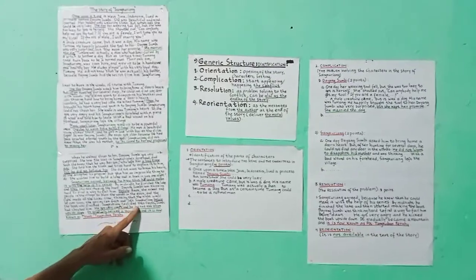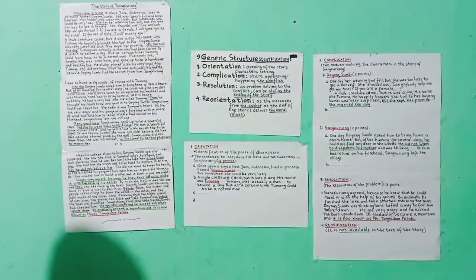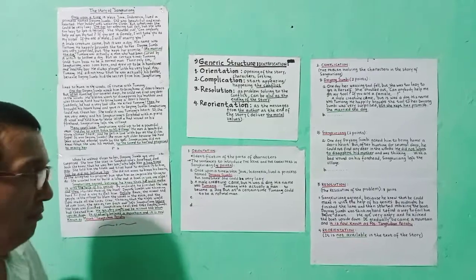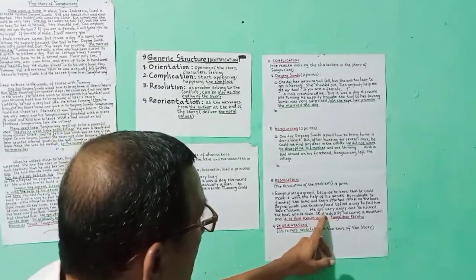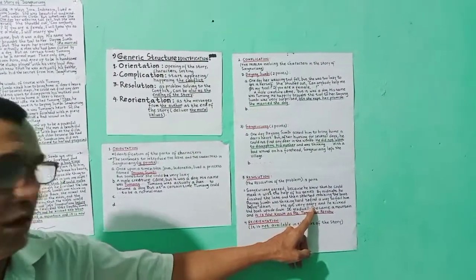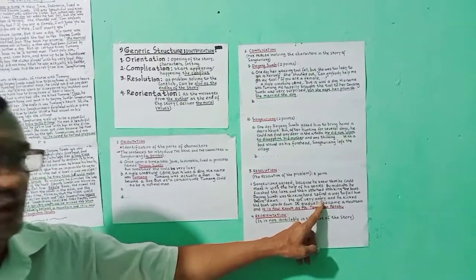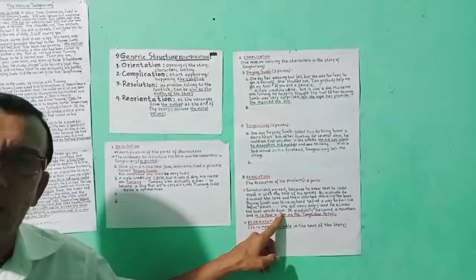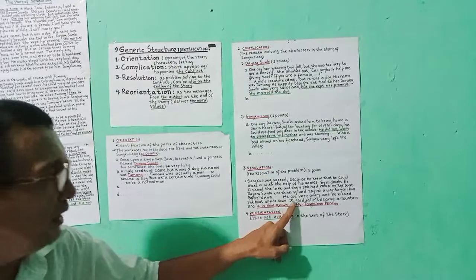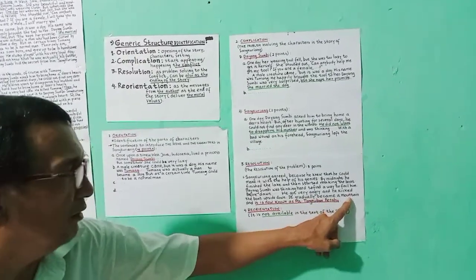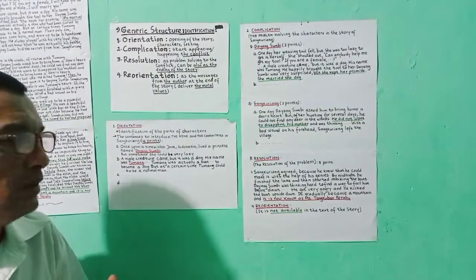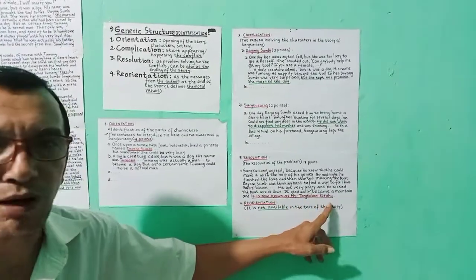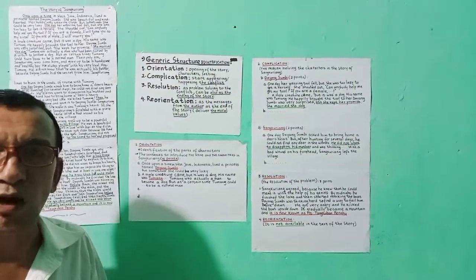Sang Kuryang realized that Dayang Sumbi had cheated him. He got very angry because he realized, oh I was tricked by Dayang Sumbi. And he kicked the boat upside down, so it was turned over. It gradually became a mountain. The boat gradually transformed into a mountain. And it is now known as Mountain Tangkuban Perahu. That's what is now known as Mount Tangkuban Perahu.